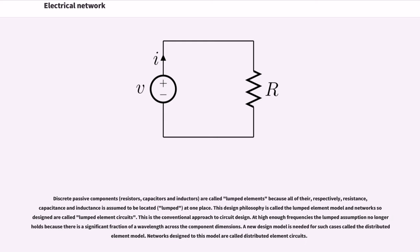Discrete passive components, resistors, capacitors and inductors, are called lumped elements because all of their, respectively, resistance, capacitance and inductance is assumed to be located, lumped, at one place. This design philosophy is called the lumped element model and networks so designed are called lumped element circuits.